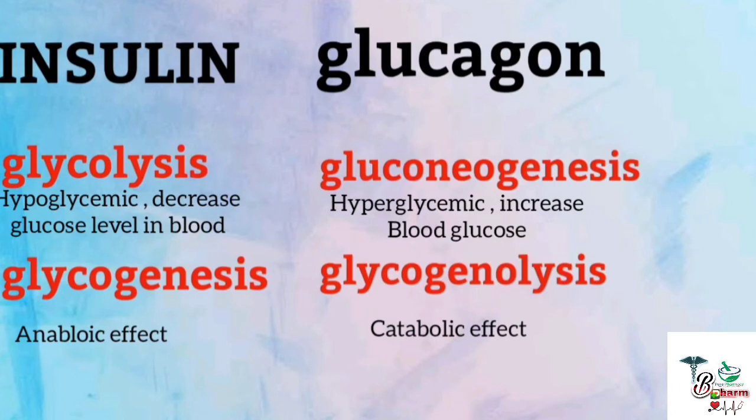In these pathways, there are two important hormones. Insulin is produced from the beta cells of the pancreas, and glucagon is produced from the alpha cells of the pancreas. Insulin is an anabolic hormone — anabolic means formation. Glucagon is a catabolic hormone — catabolic means destruction.